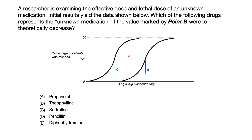A researcher is examining the effective dose and lethal dose of an unknown medication. Initial results yield the data shown below. Which of the following drugs represents the unknown medication if the value marked by point B were to theoretically decrease? There's an infographic here, so pause the video, review that, and attempt to make a guess on this question before I reveal the correct answer on the next slide.